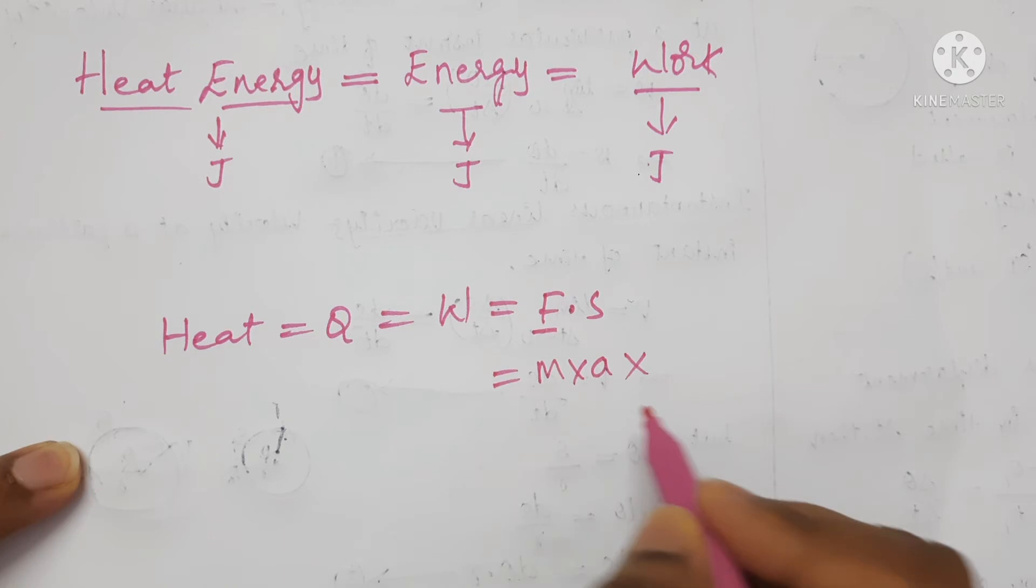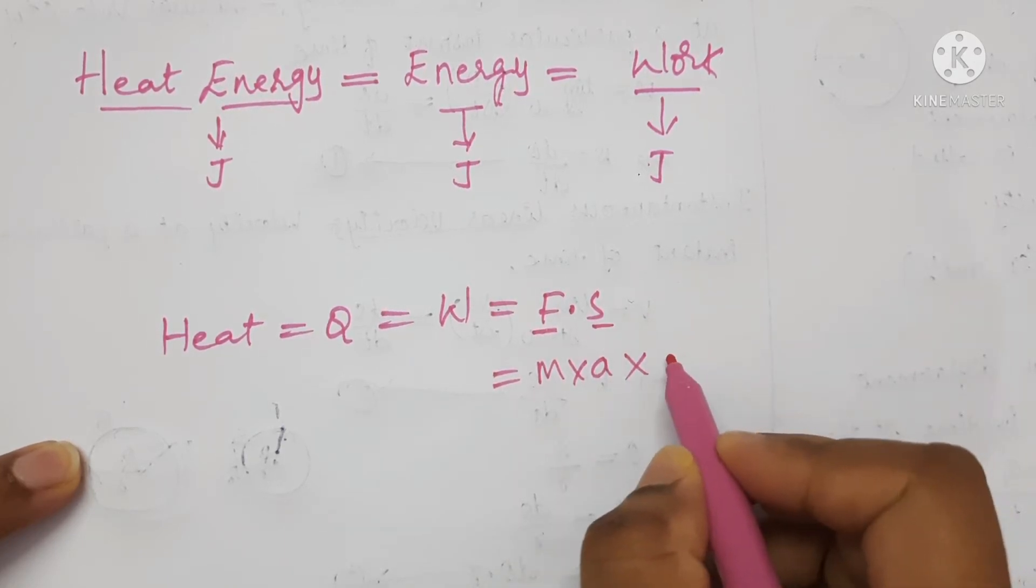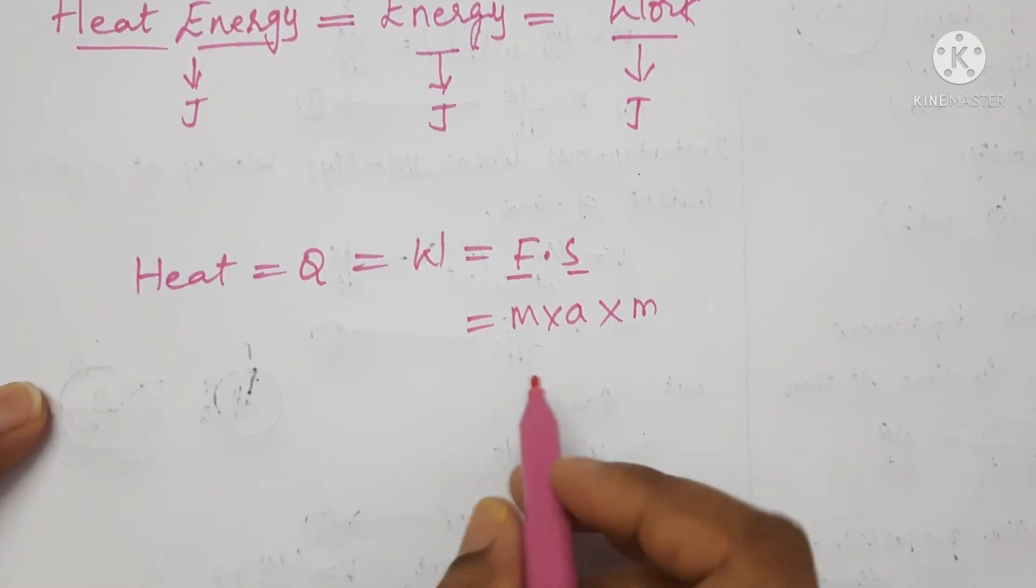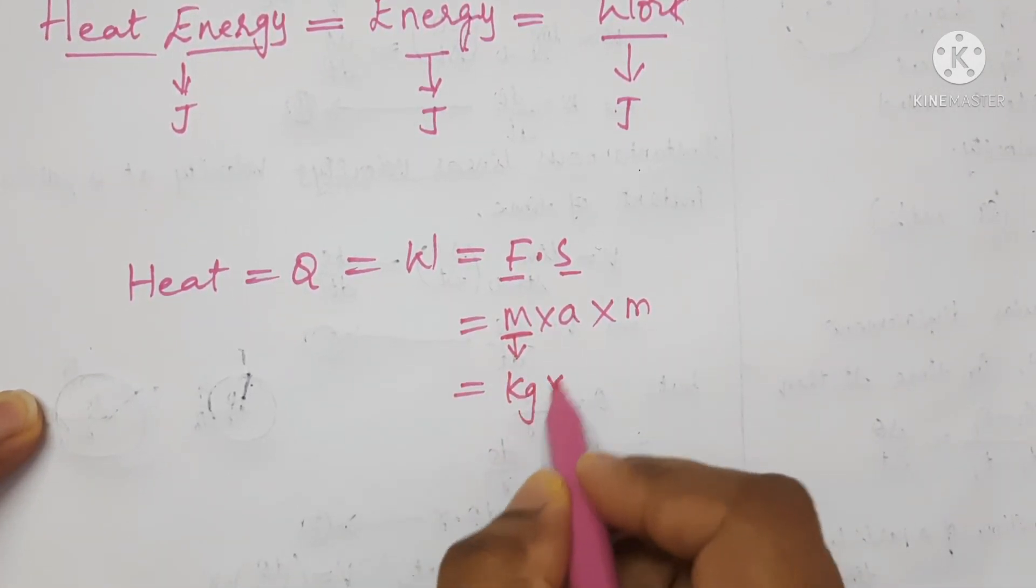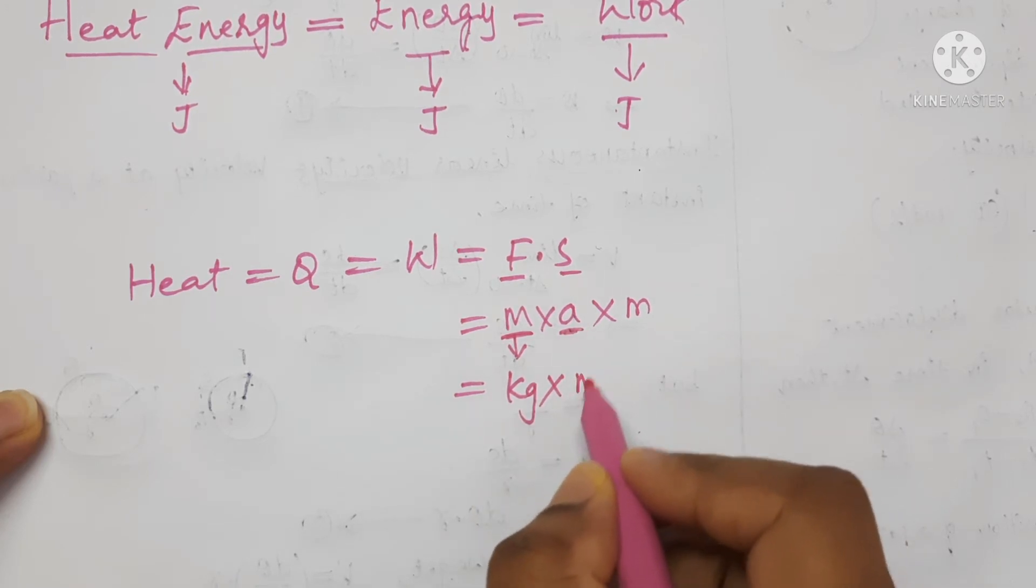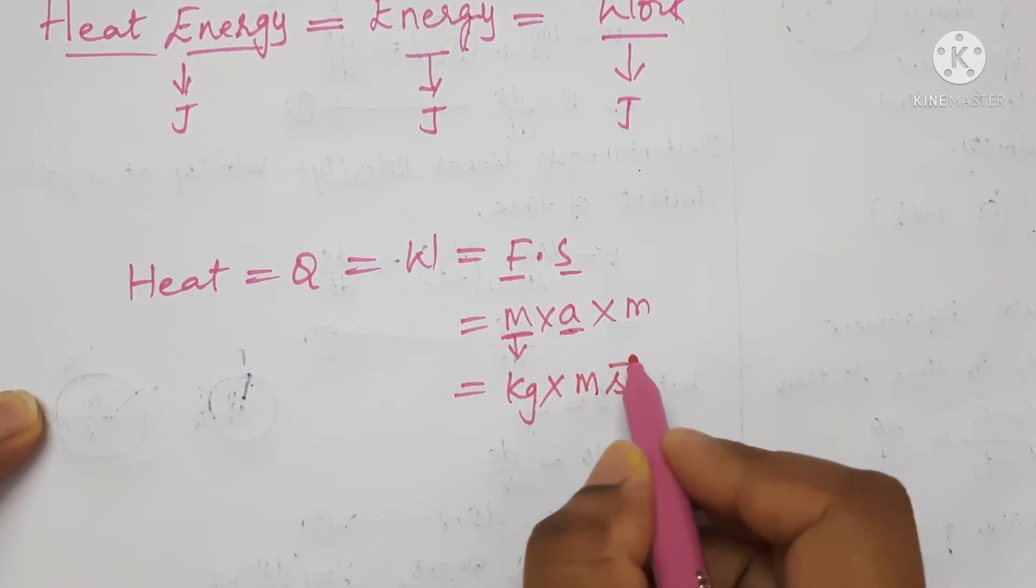Into here displacement is there. SI unit of displacement is meter. Write the SI unit for mass kilogram and for acceleration meter per second square, that is s to the power of minus 2.